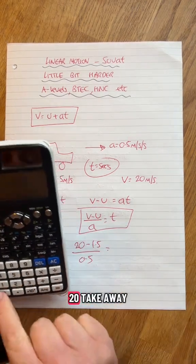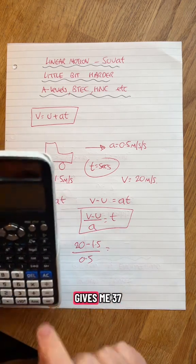Calculator, let's get a calculator going here. 20 take away 1.5, that is that. Divide that by 0.5, gives me 37.